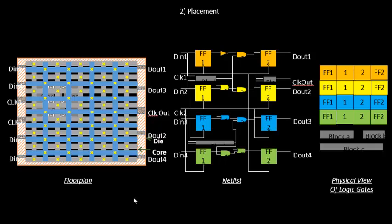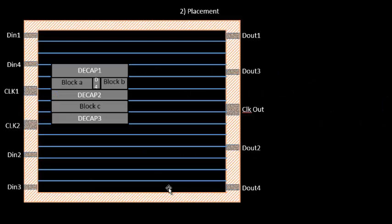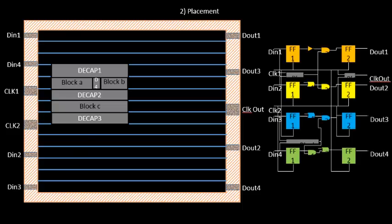We can't place cells blindly — there are constraints that drive placement. For example, FF1 should be placed very close to the DIN1 port; otherwise there will be timing impact. There are both timing constraints and physical constraints that drive placement. We have the floor plan and a miniature view of the netlist to understand the connectivity information.